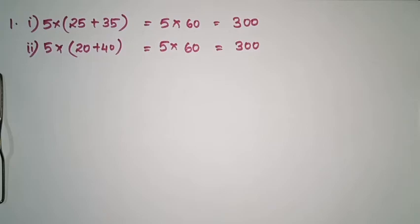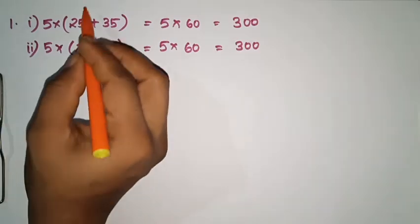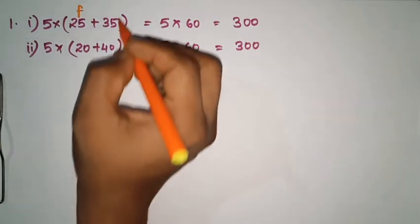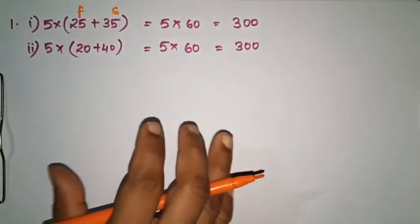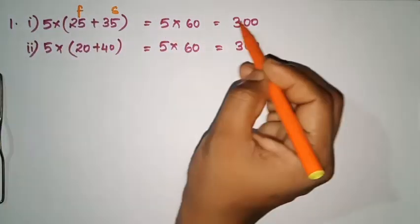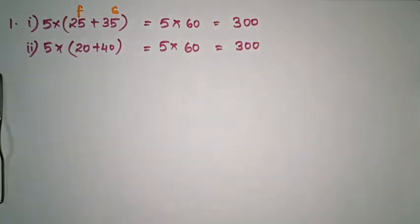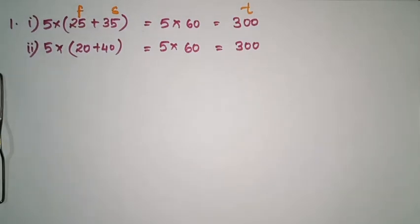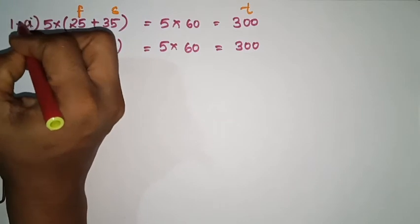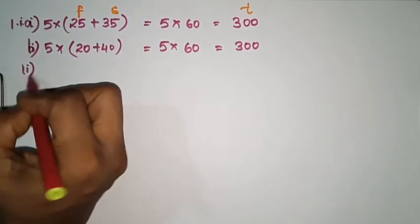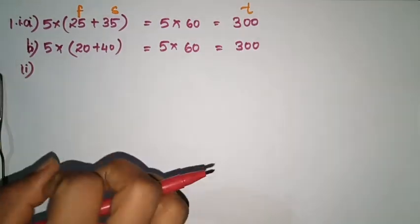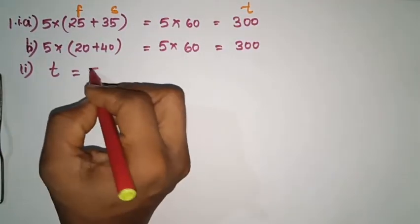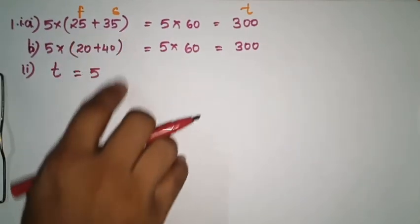Let's say the number of children in the first room is F, the number of children in the second room is S, and the total number of biscuits is T. How do we set up the equation using these variables?